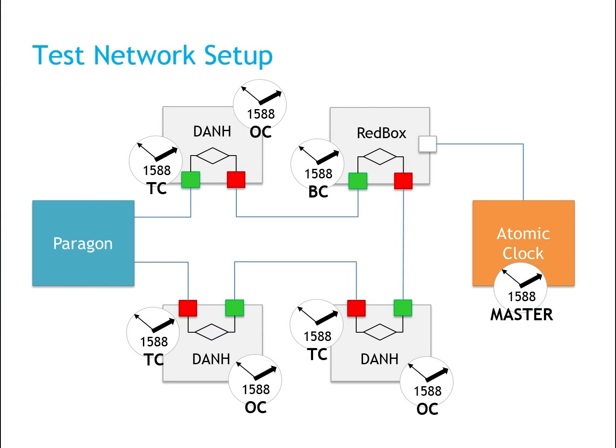Here is a simple example of the test network. The Paragon emulates the different ring sizes to test delay and jitter, congestion, and error situations. Please see the test plan document for more information and more complex test networks. The link is in the video description.